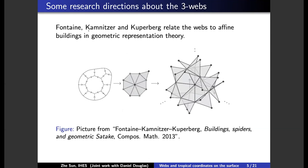So Fontaine, Kamnitzer and Kuperberg relate the webs to the so-called affine building in geometric representation theory. So the first picture is a web on a disk and the second picture is the dual graph of this web. And this dual graph, so-called diskoid, is in relation to this affine building.